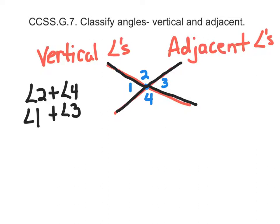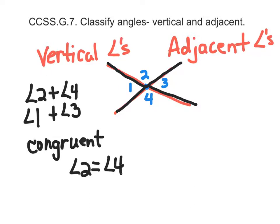Not only are they vertical, they are congruent. Congruent means that they are the same size and shape. So angle 2 equals angle 4. Angle 1 equals the measure of angle 3.